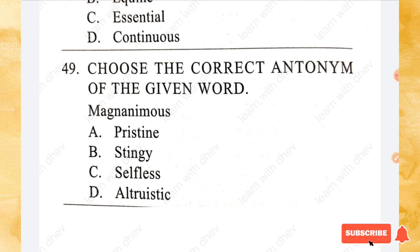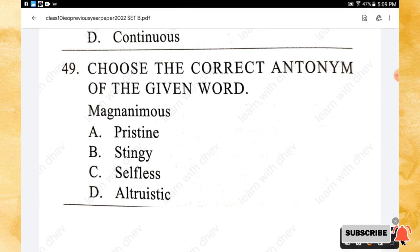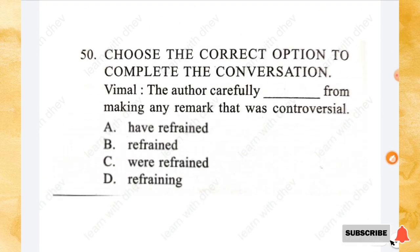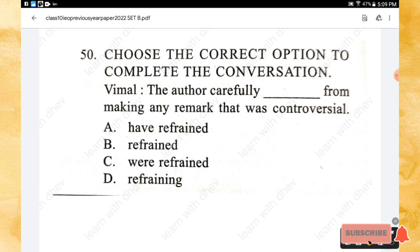Question 49: Choose the correct antonym of 'magnanimous.' Options: pristine, stingy, selfless, altruistic. The opposite is option B — stingy. Question 50: The author carefully _____ from making any remark that was controversial. Options: have refined, refined, were refined, refraining. The right answer is option B — refined. Hope you all liked this video. Thanks for watching.